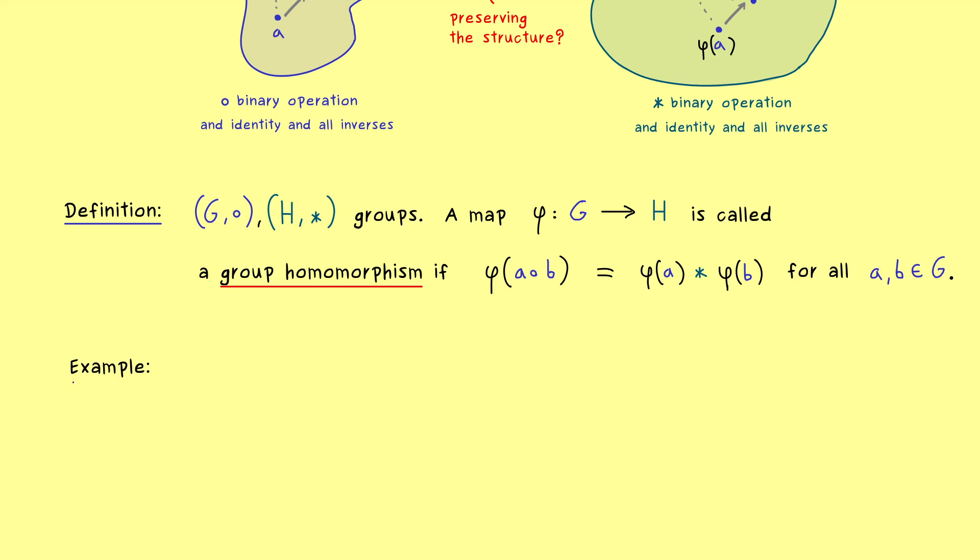But before we do that, I first want to show you a very nice example of a group homomorphism. For this the group G should be given by the real numbers together with the addition. And the group H should be given by the real numbers together with the multiplication. However, in this case you already know, if you want to have a group we have to exclude 0. And then we have two well defined groups, which means we have an identity element and all the inverses. And please don't forget, here the number 1 is the identity element and there the number 0.